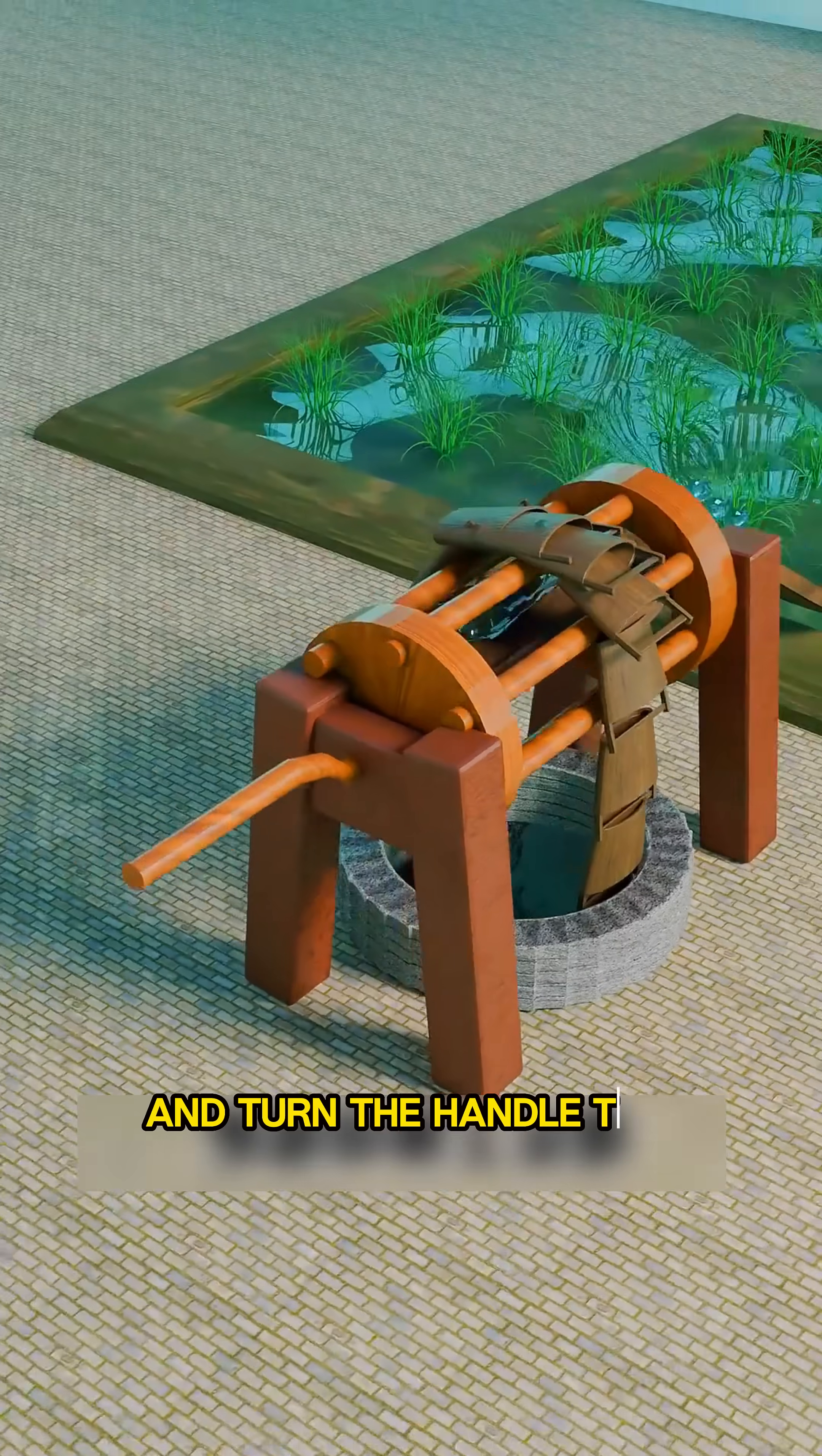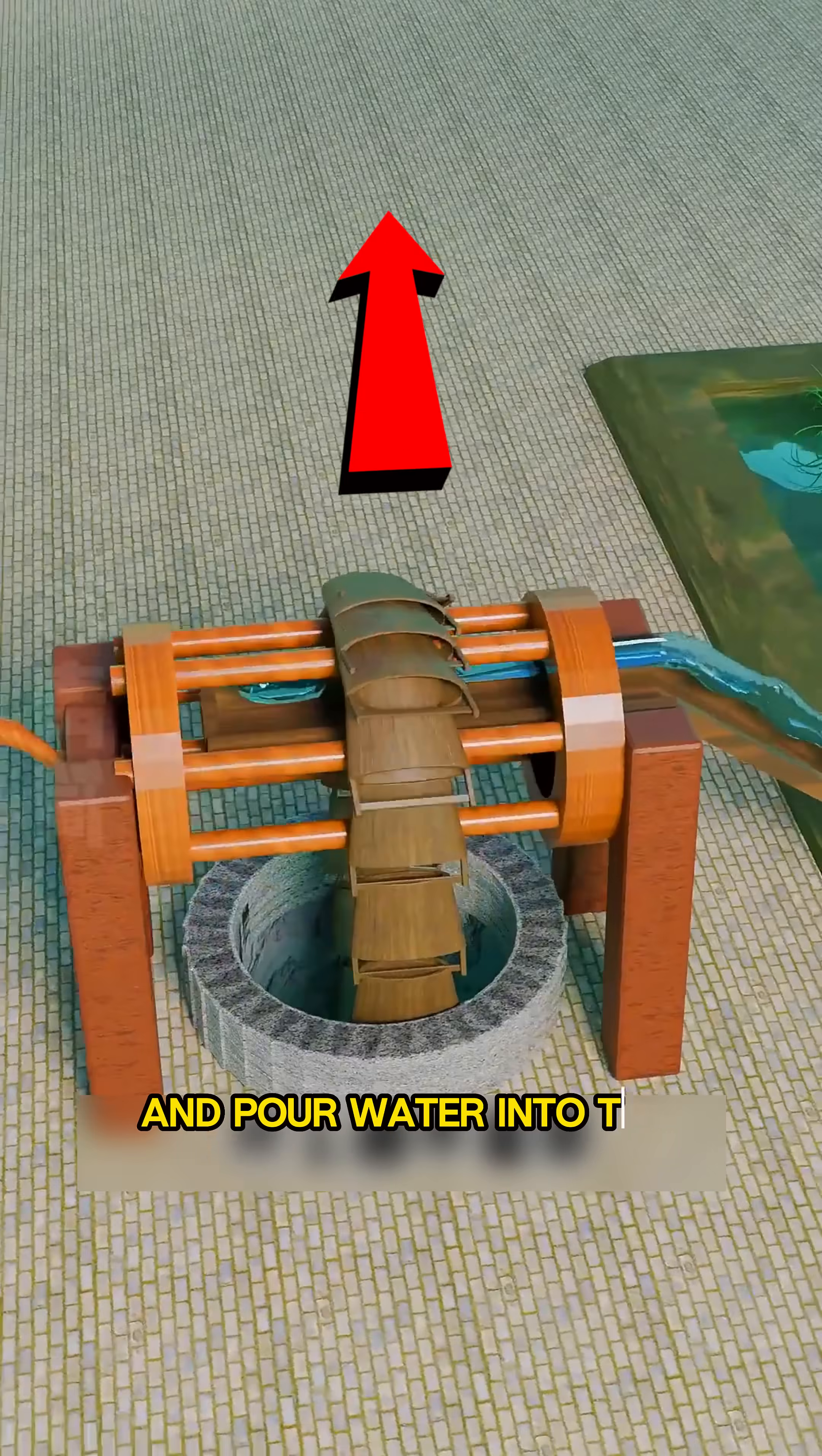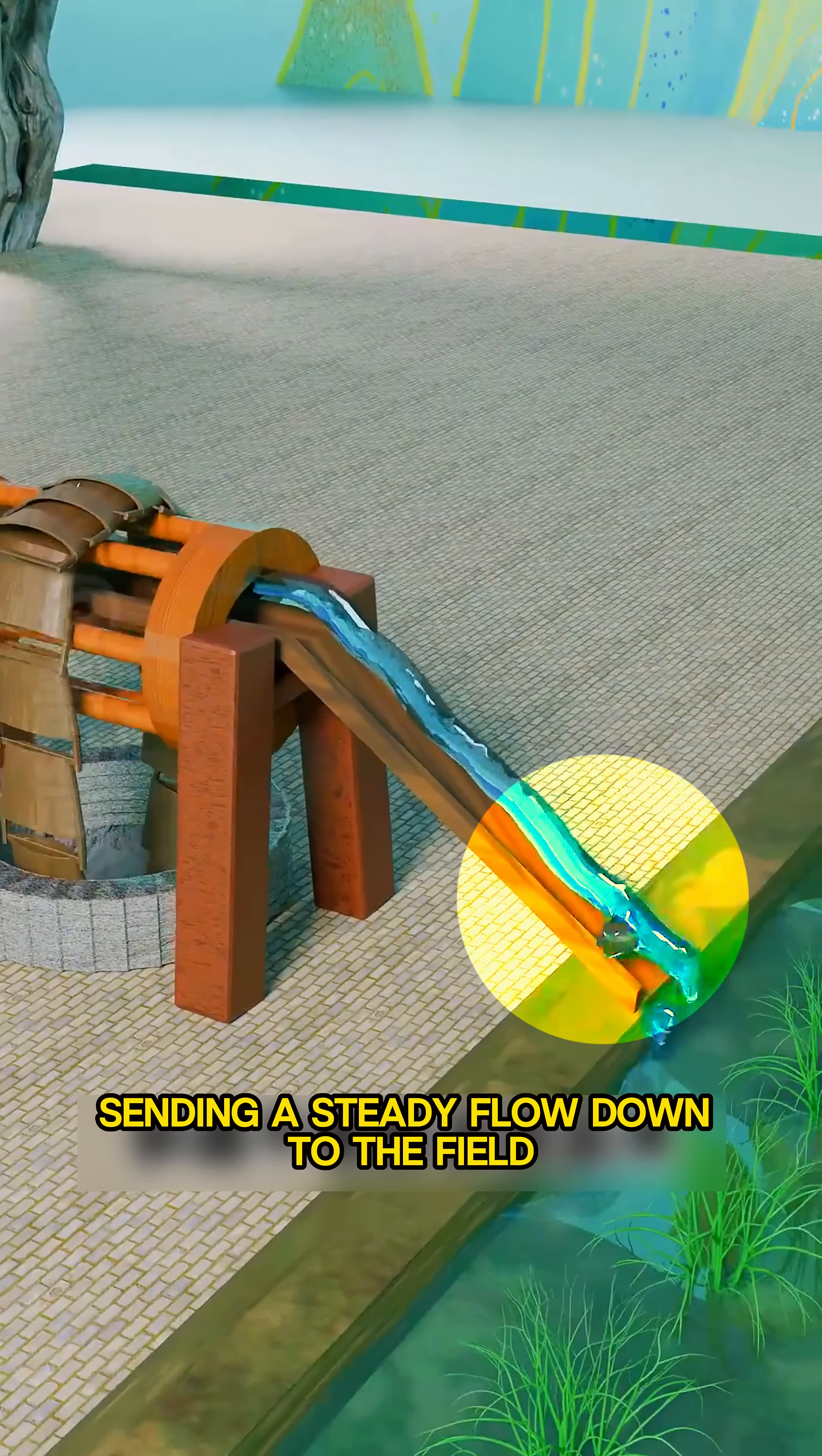Now, when you mount the bucket chain on the wheel and turn the handle, the buckets rise up and pour water into the channel at the top, sending a steady flow down to the field.